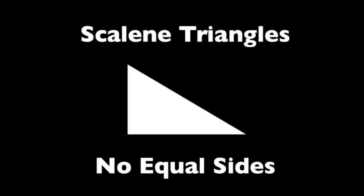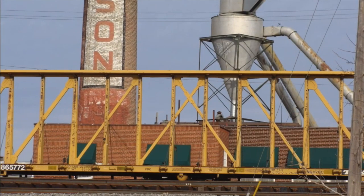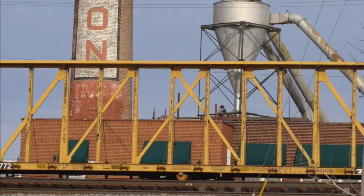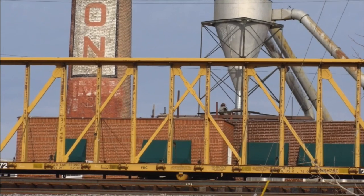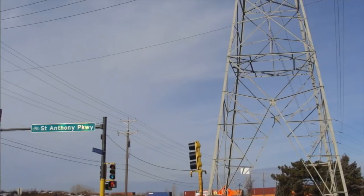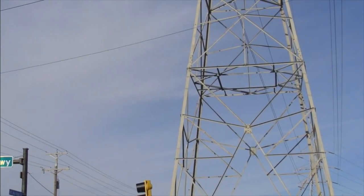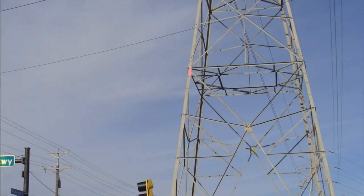Scalene triangles have no equal sides — no sides are the same. Here's an example of a scalene triangle. Here's another example of a scalene triangle.